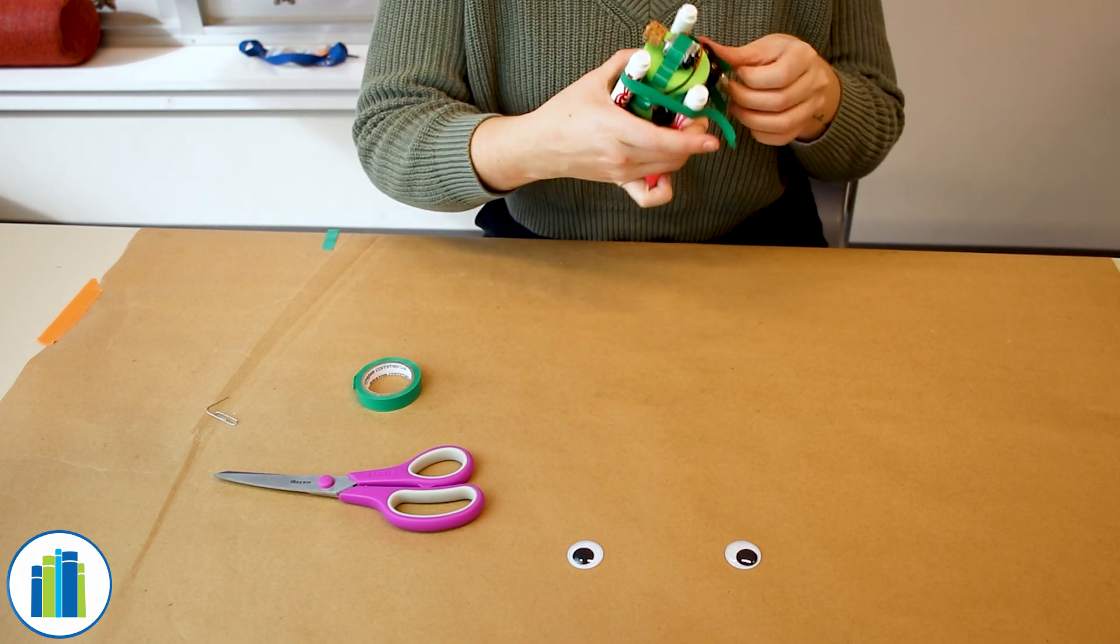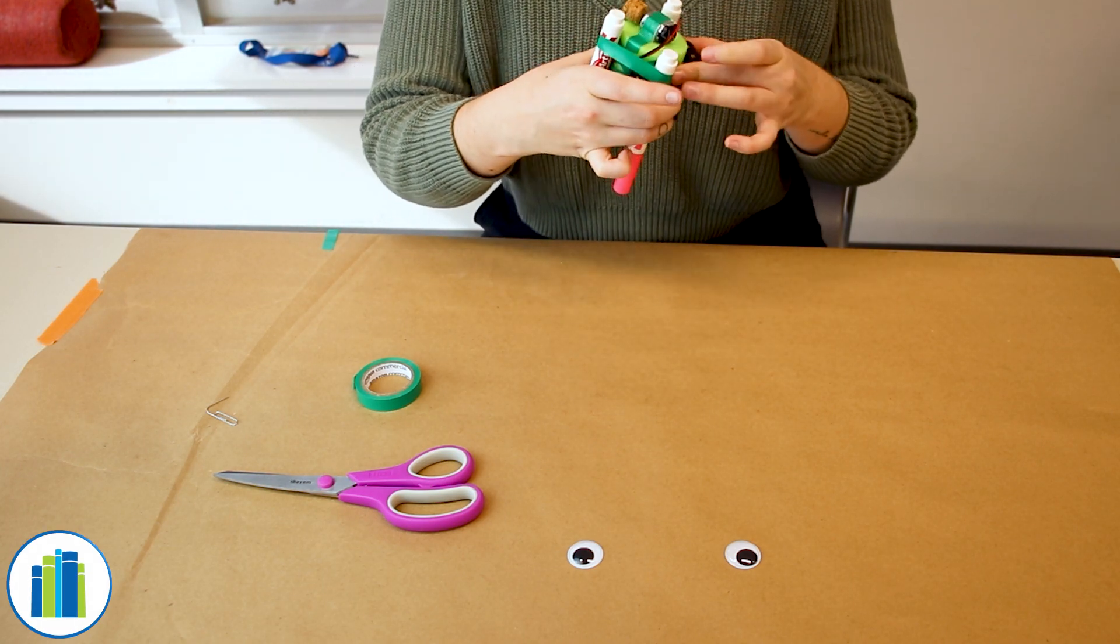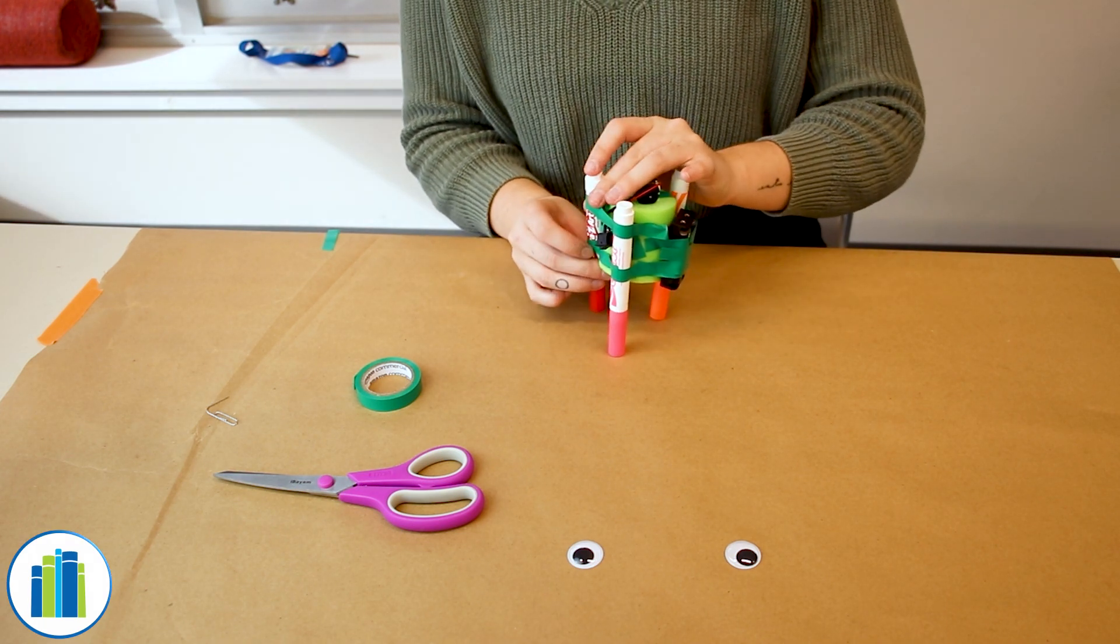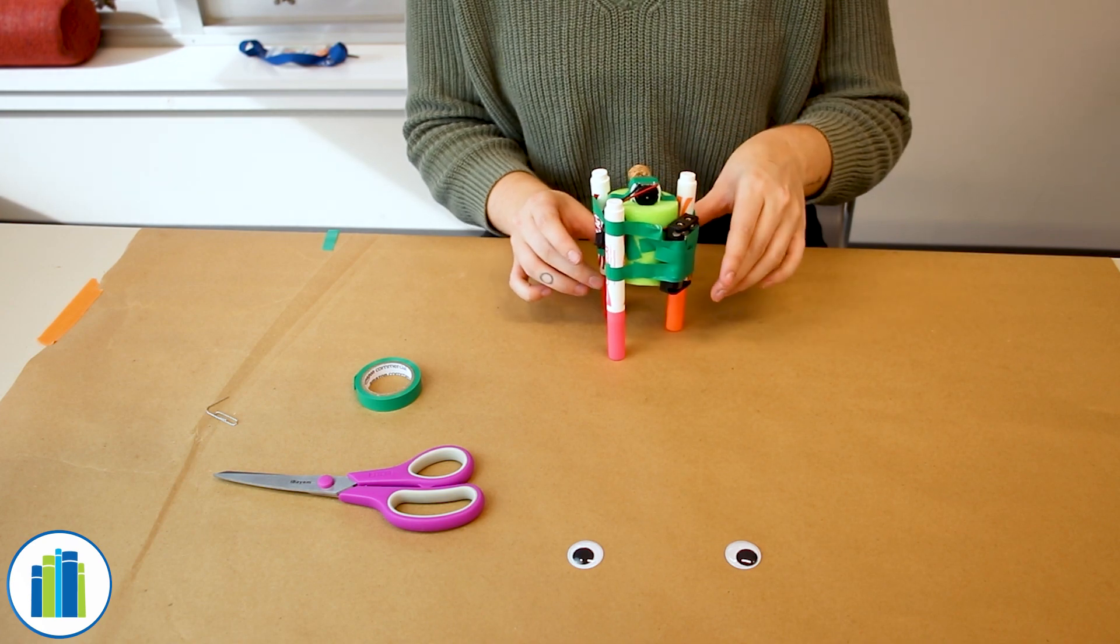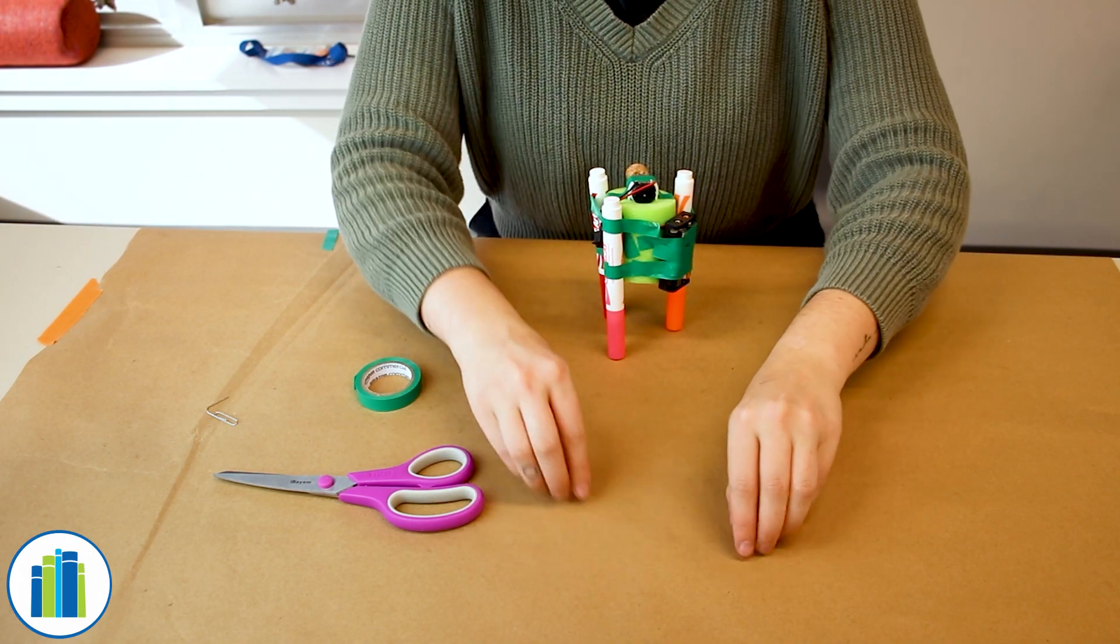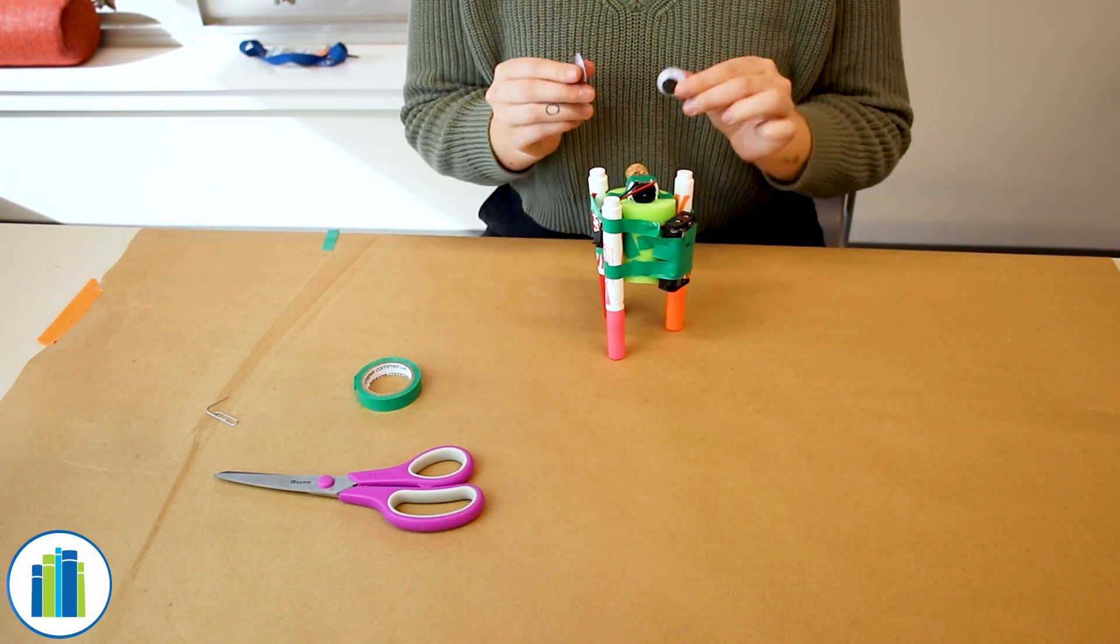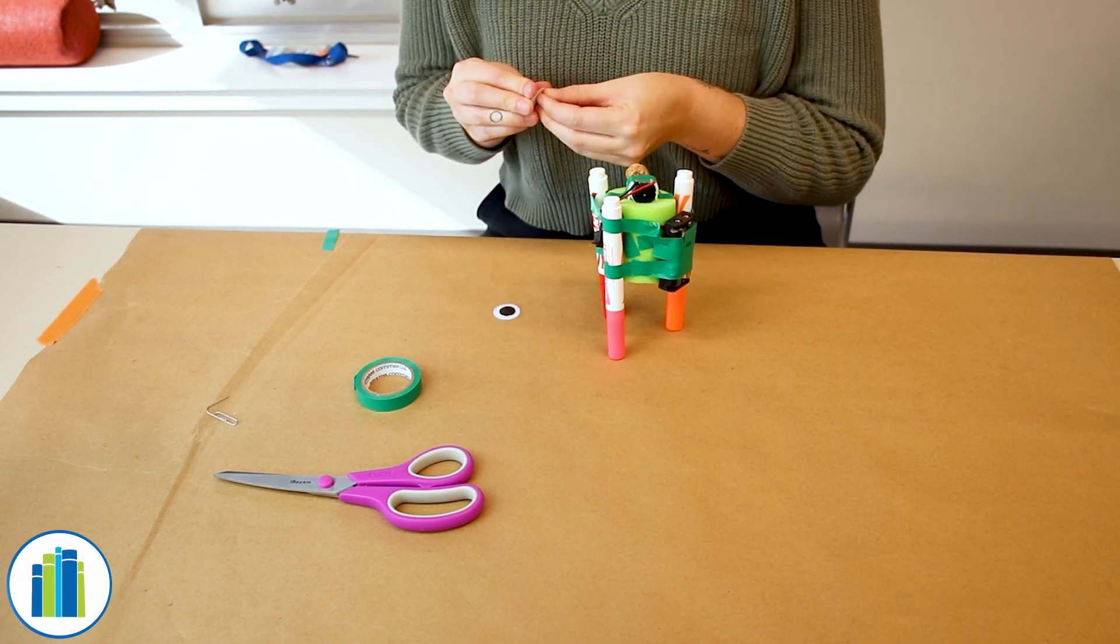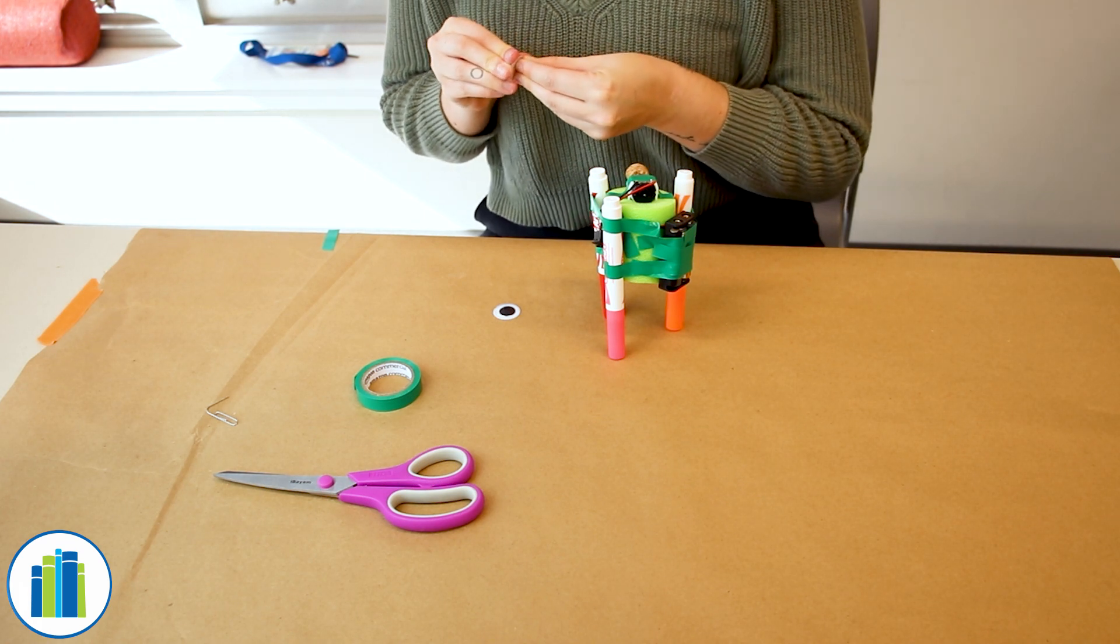So you also have some googly eye stickers that you can add to the side of it just to give your robot a little face. I'm going to do that. Okay, there's our robot, so we're done.